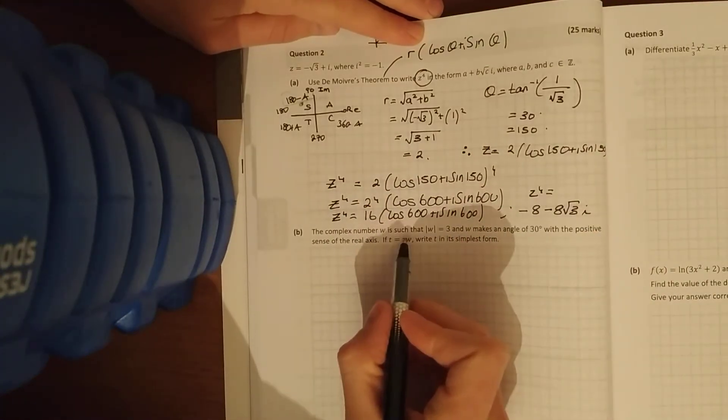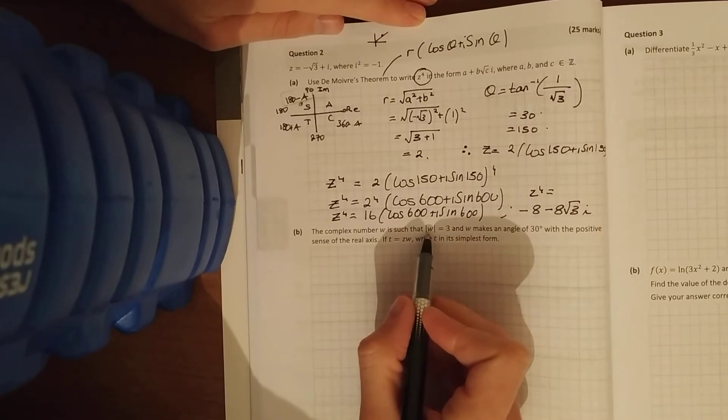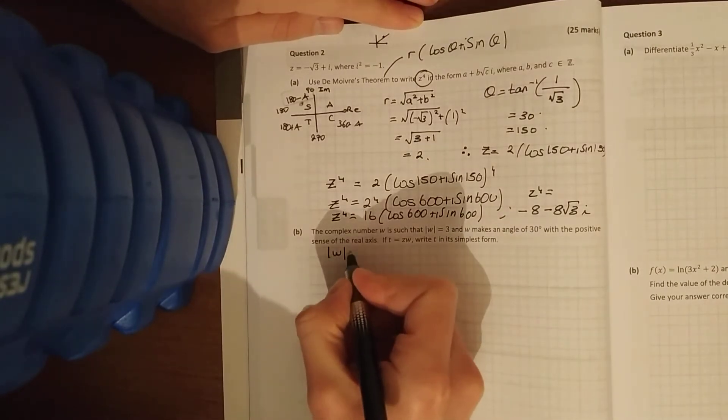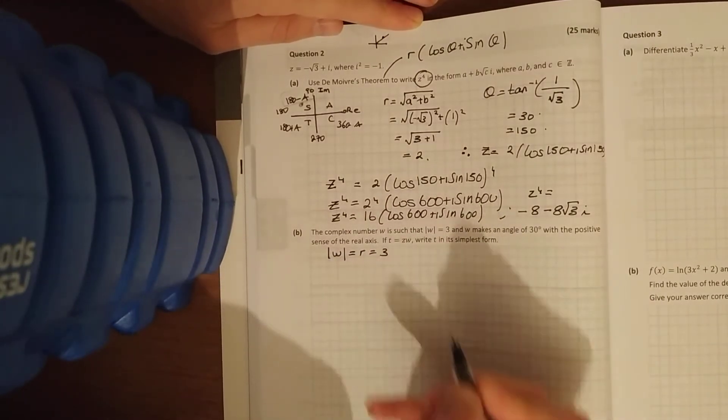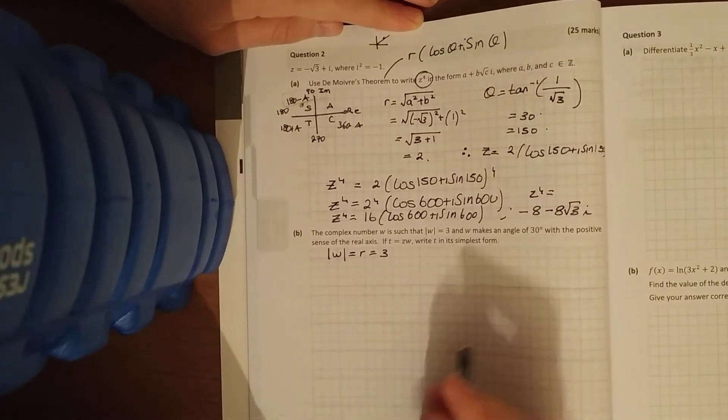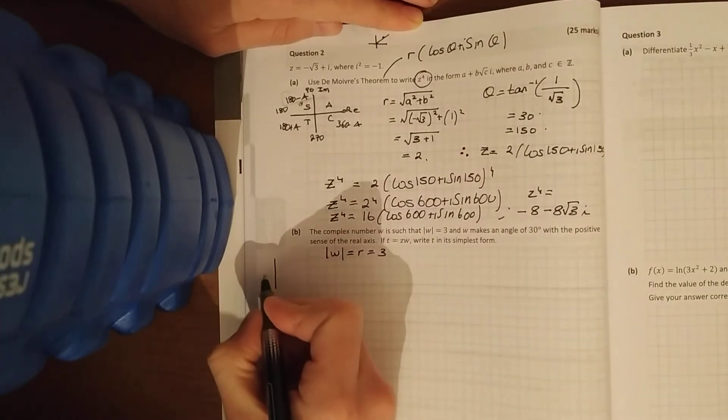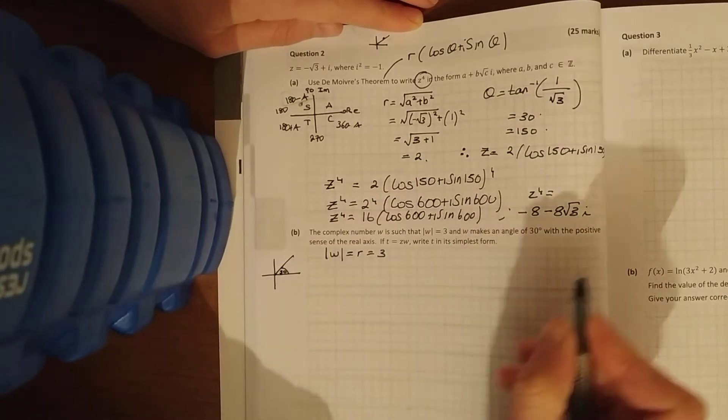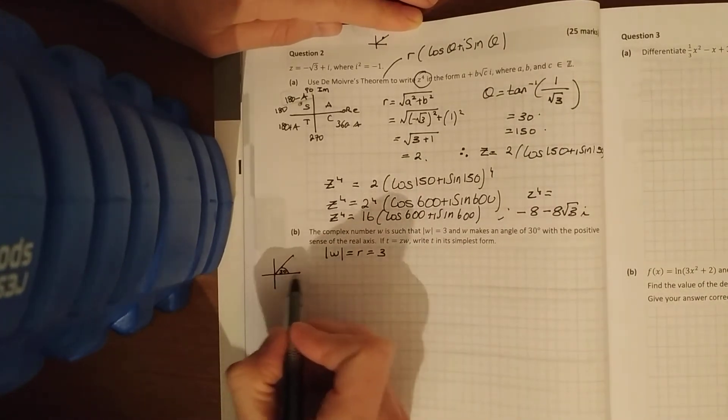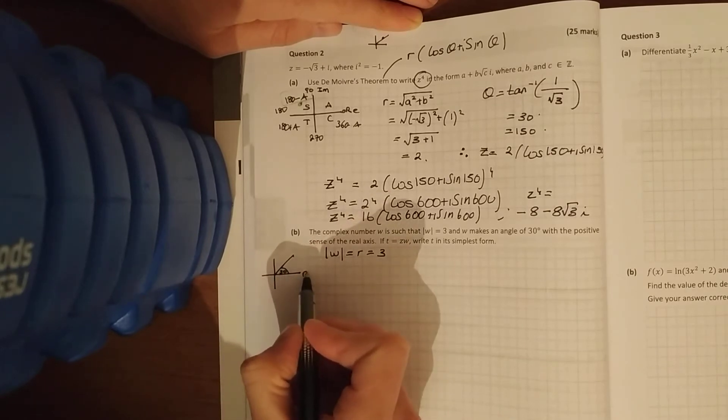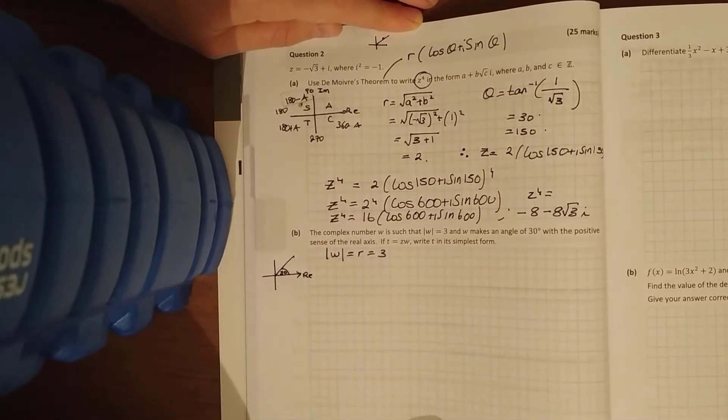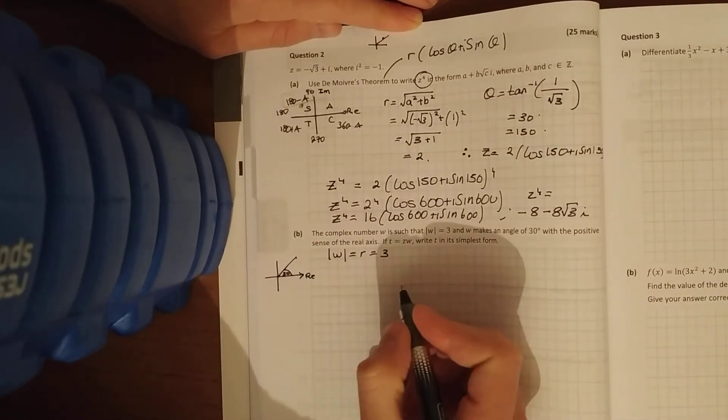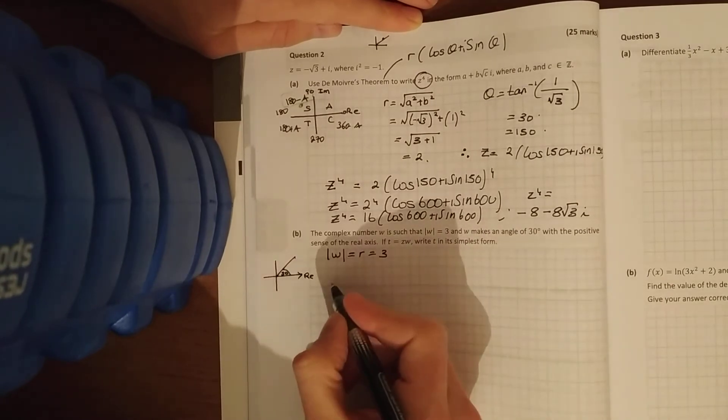The next thing, the complex number w has it such that the modulus of w, that's our r, is 3, 3 units from the origin, makes an angle of 30 degrees, there's our 30 degrees, with the positive sense of the real axis, there's my positive values on the real axis, just like your x-axis. If t is equal to z over w, write t in its simplest form now.